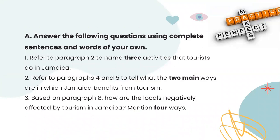By now we are done with the text. I hope you are understanding everything. After reading the text and understanding everything, you will be solving two parts — A and B — as comprehension questions. Please, if you still do not understand the text, go and read it again, because to solve comprehension questions correctly you have to be able to analyze and understand the text. Answer the following questions using complete sentences and words of your own. Number one: refer to paragraph two to name three activities that tourists do in Jamaica. Number two: refer to paragraphs four and five to tell what the two main ways are in which Jamaica benefits from tourism. Number three: based on paragraph eight, how are the locals negatively affected by tourism in Jamaica? Mention four ways. Please, if you are an online student, pause this video and try to solve them on your own.